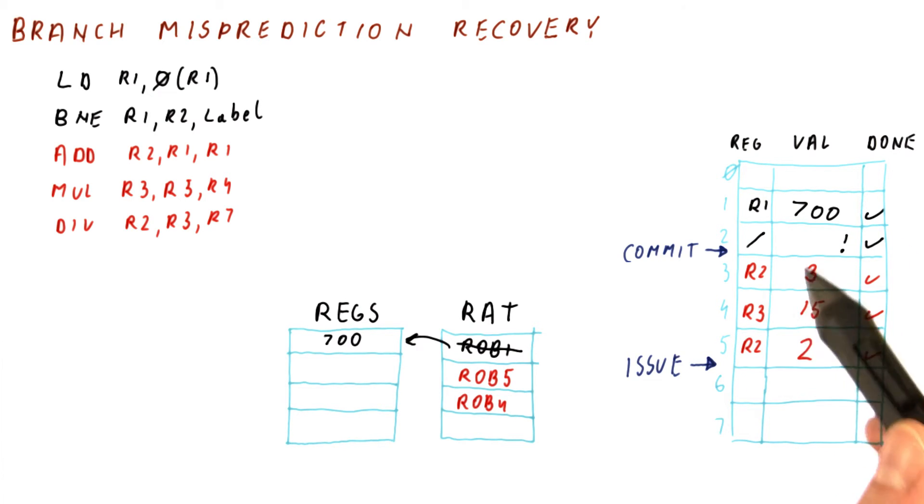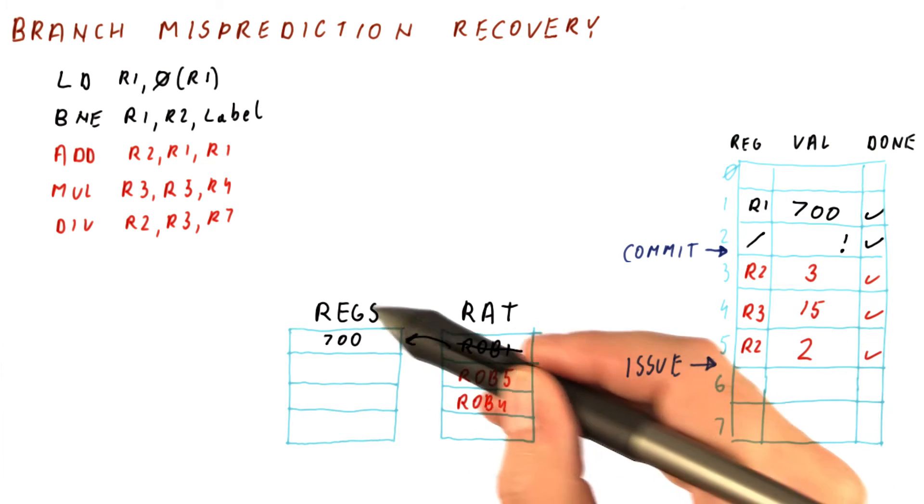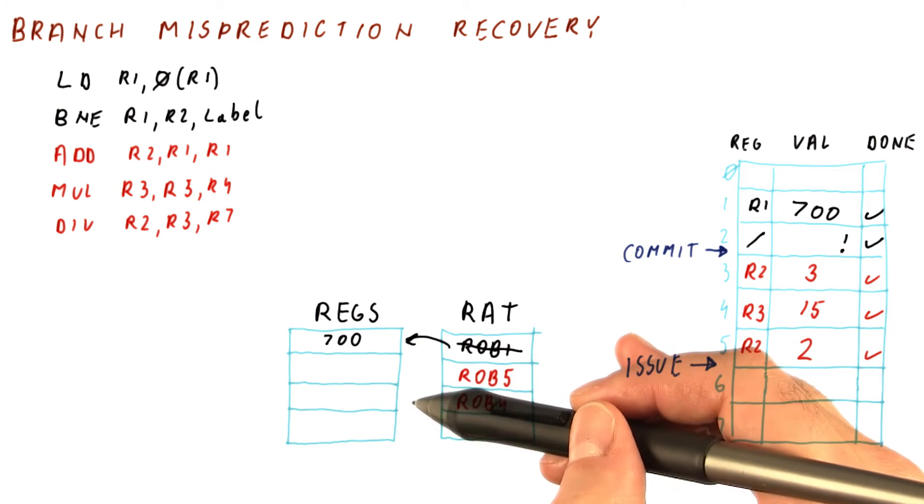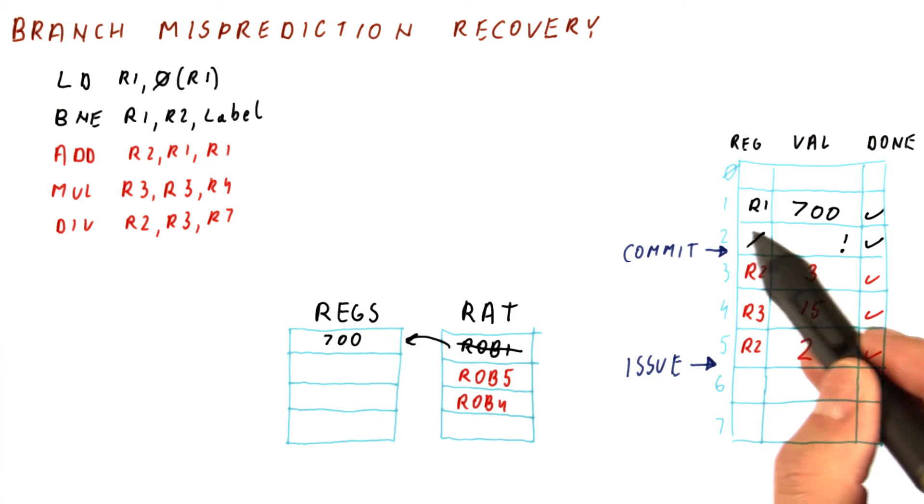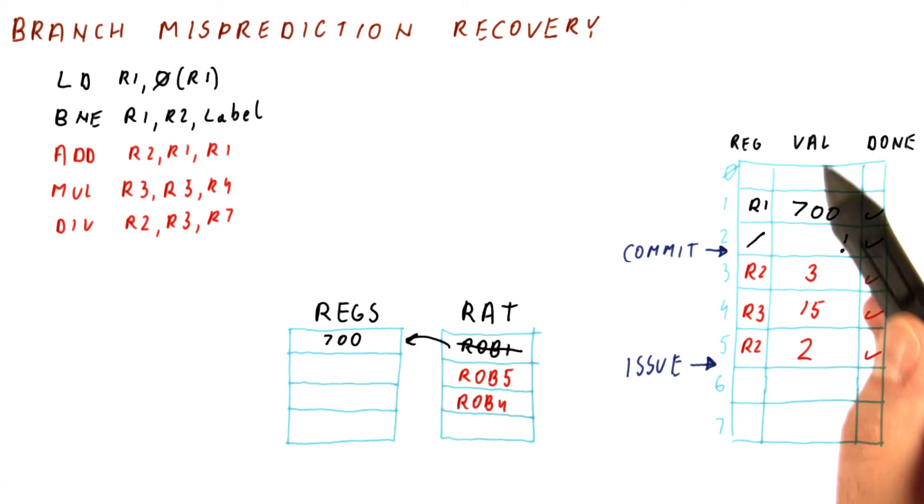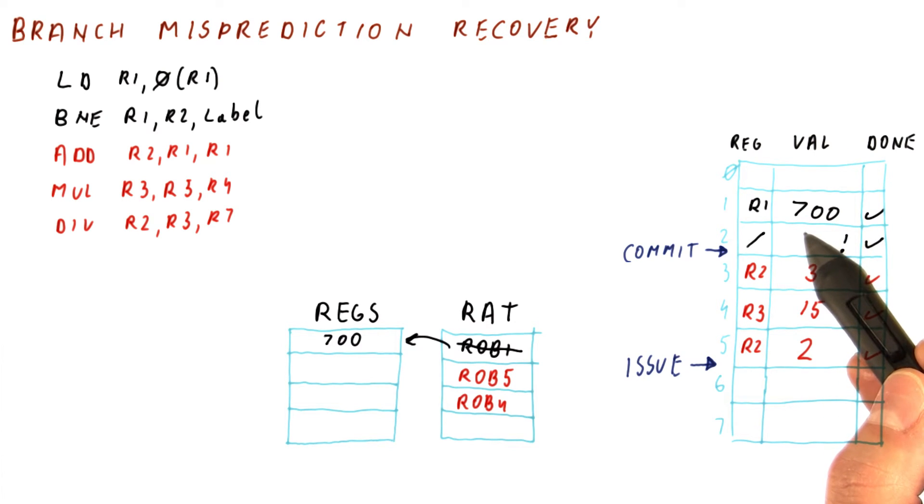Well, with the ROB-based processor, at the point where the commit has reached the branch, the registers contain exactly the values they need to contain at the point of the branch. All of the instructions prior to the branch have been committed,